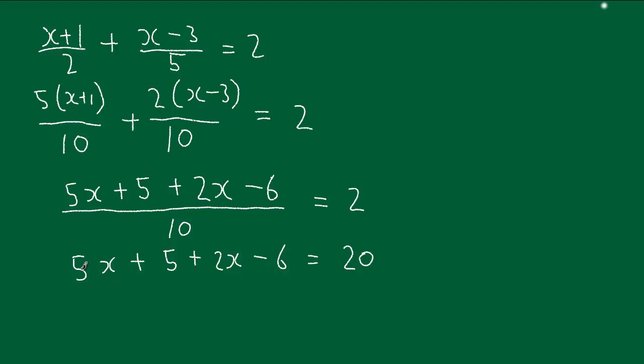Collecting this lot together, we've got a 5x there and a 2x there, so that's 7x. We've got a plus 5 and a minus 6, so that makes minus 1. Equals 20.